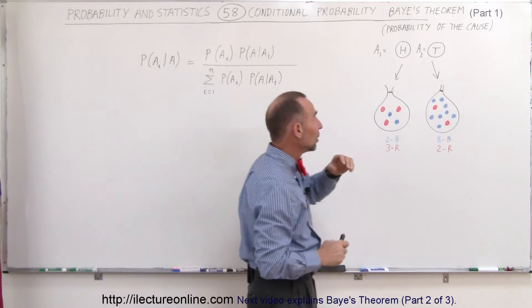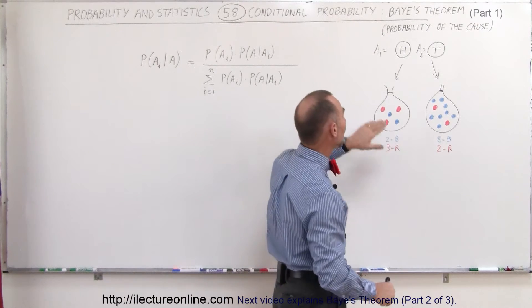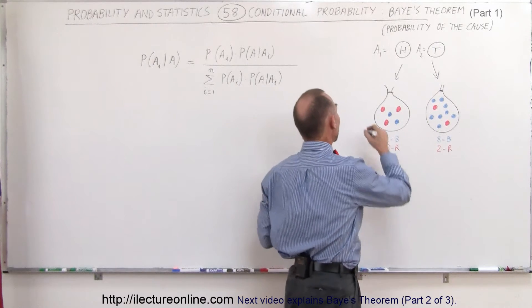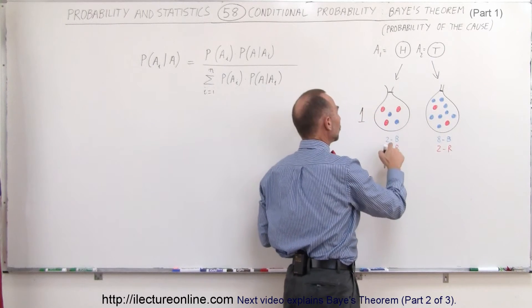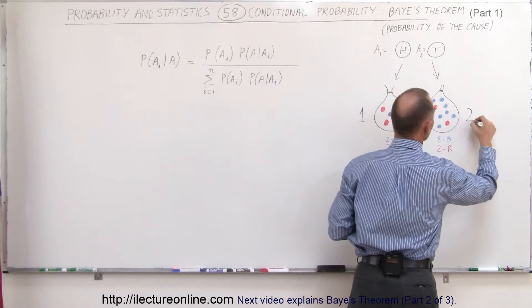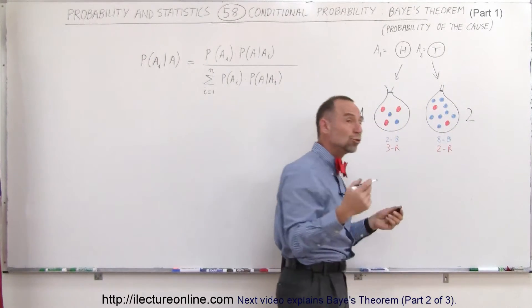So, for example, we have some independent events. We have two bags that contain marbles. The left bag, let's call this bag number one, contains two blue marbles and three red marbles, and bag number two contains eight blue marbles and two red marbles.